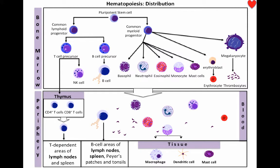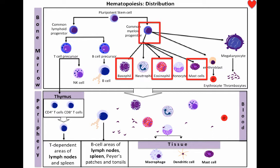Hematopoiesis is the formation of blood cellular components. This is a process that begins in the bone marrow. As we can see here, basophils, eosinophils, and mast cells are derived from a common myeloid progenitor. On the other hand, natural killer cells are derived from a common lymphoid progenitor, along with T cells.